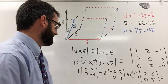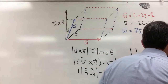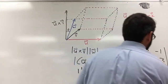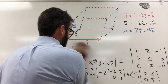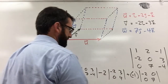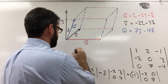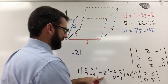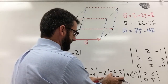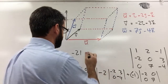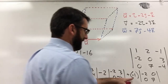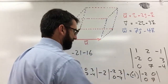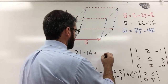So: 0 times negative 4 minus 3 times 7 is 0 minus 21, which is negative 21. Then negative 2 times negative 4 is positive 8, minus 0 times 3 is 0, so that submatrix gives 8; times negative 2 gives negative 16. Then negative 2 times 7 is negative 14, minus 0 times 0 is 0, giving negative 14; times negative 1 gives positive 14.